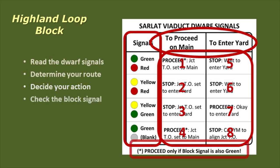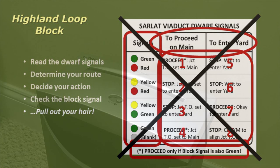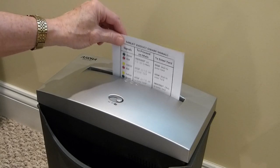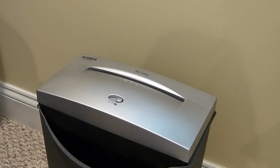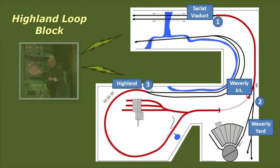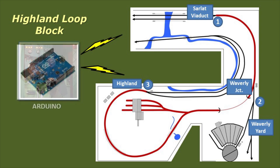Plus they also had to pay attention to the block signal. Given that operators tend not to read directions, the shredder is the only good place for this confusing matrix. What's needed is an intelligent system to control the signals for Highland Loop. That's where the Arduino comes in.